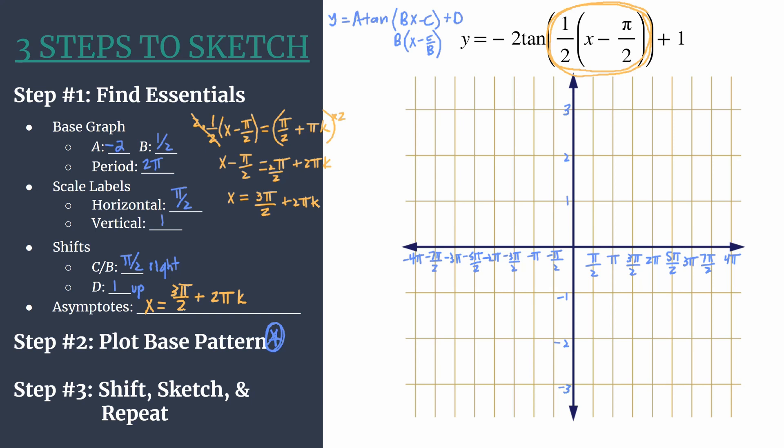So now we've done the hard part. We've done all the analysis. We've got everything organized. We're ready for step 2, where we'll plot the base pattern. And that star helps us remember that it's going to be reflected from the original tangent graph, y equals tan x. And remember when we're doing this, we want to do it lightly, because this is not our final graph. It is an intermediate, and we'll shift in the next step.